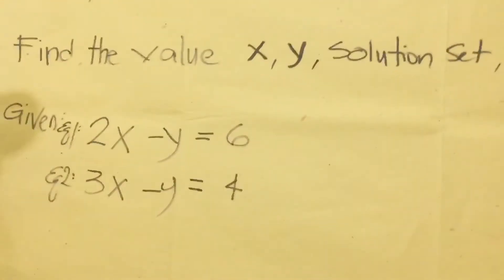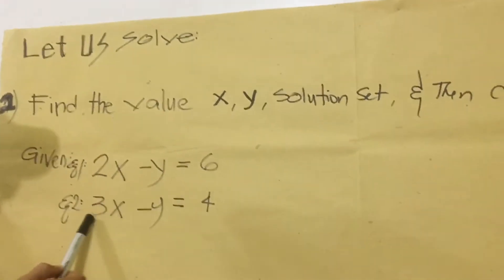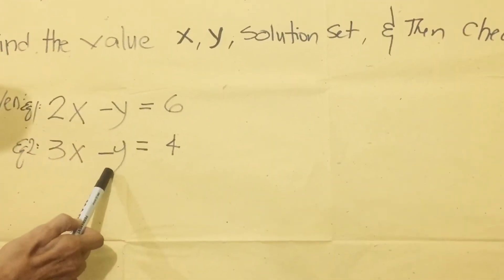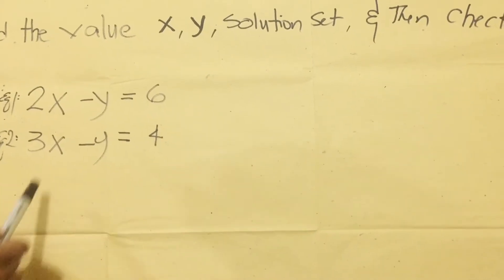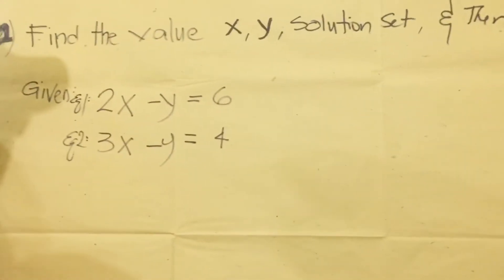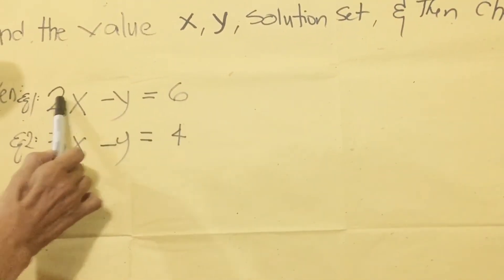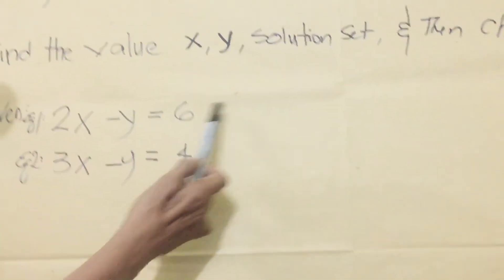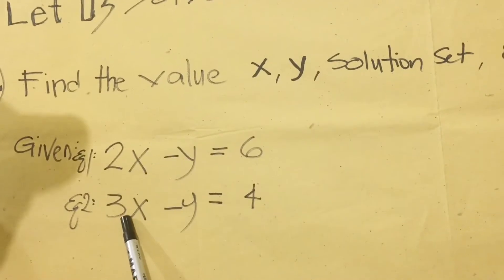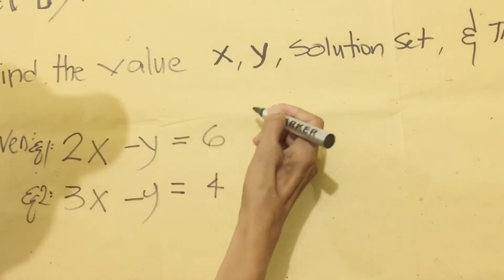The problem here is we cannot immediately add the given first equation and second equation, because if we add 2x and 3x, and negative y and negative y, there is no variable to be eliminated. So the first thing we do is find a number that, when we multiply, gives results in both equations that we can eliminate.